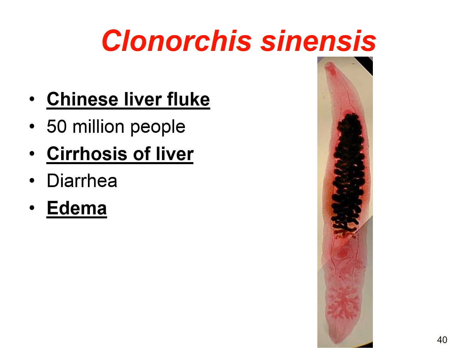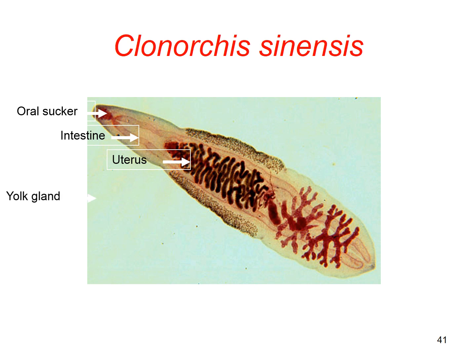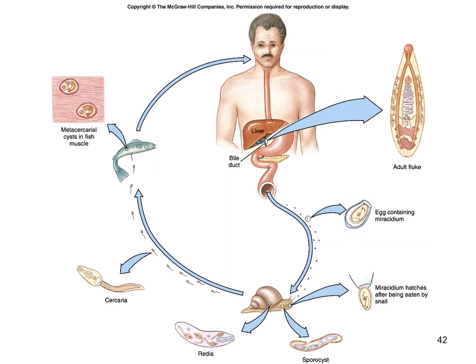Clonorchis sinensis is the Chinese liver fluke. It infects over 50 million people and causes cirrhosis of the liver, diarrhea, and edema — swelling in the tissue with a lot of fluid buildup — and definitely causes pain. Here's its anatomy, showing the location of its oral sucker, intestinal area, uterus, yolk gland, testes, ovary, and seminal receptacle.